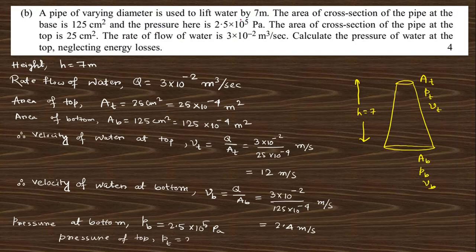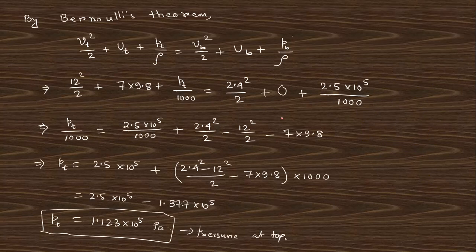Question 7b: A pipe of varying diameter lifts water 7 meters. Given areas, pressures, and flow rate at the top and bottom, the velocity at each end is found from v = flow rate / area. Applying Bernoulli's theorem between top and bottom and substituting the velocities and height difference of 7 m gives the pressure at the top. Carry out this calculation to obtain the numerical answer.